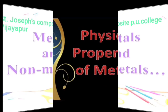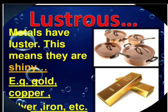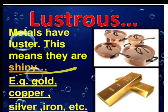Welcome back, dear students. In this video lesson, you will learn about physical properties of metals and nonmetals. In the given picture, utensils made up of copper and gold are shining. This shining property is called luster. Metals have luster — they are shiny. Gold, copper, silver, iron, aluminium — these metals are shining in nature.